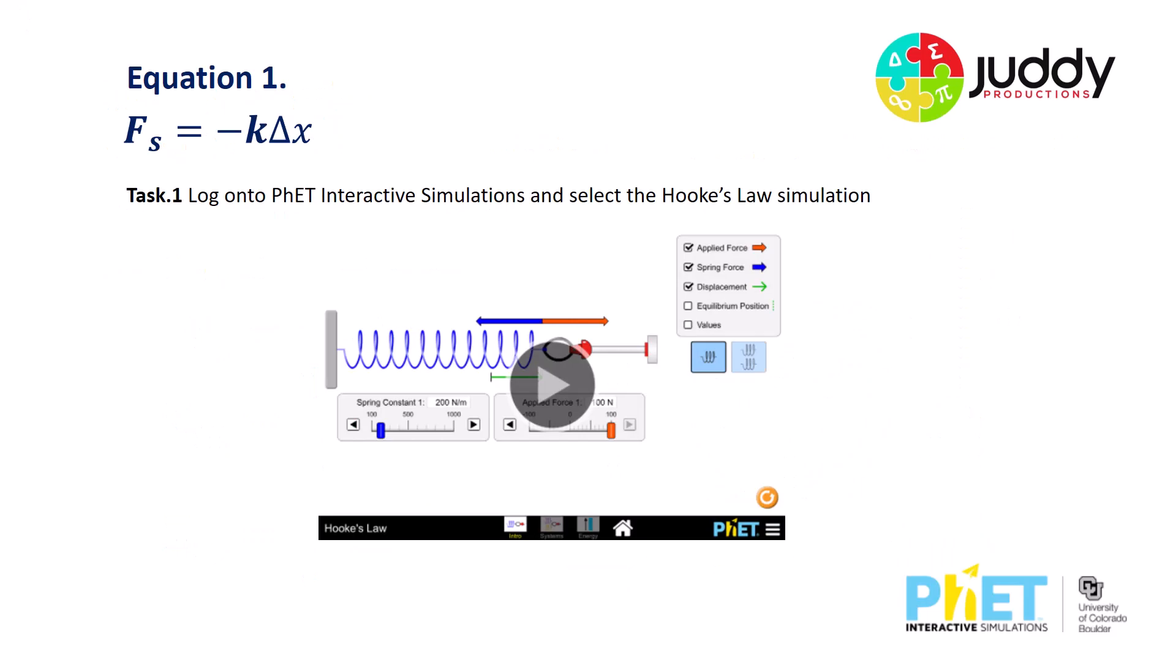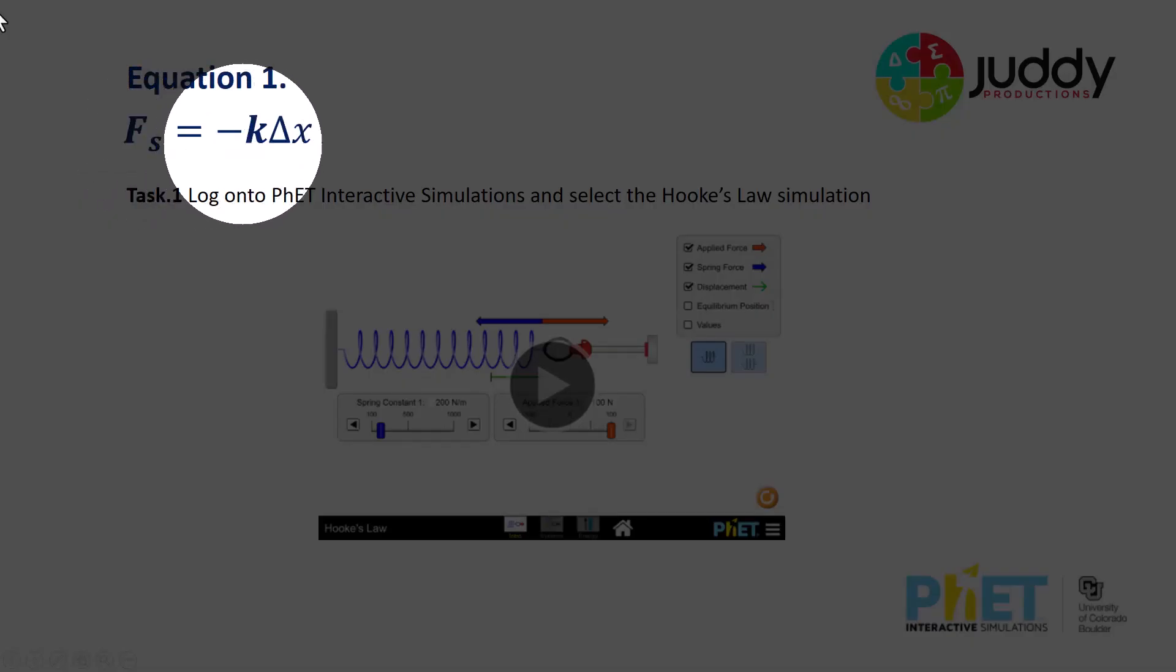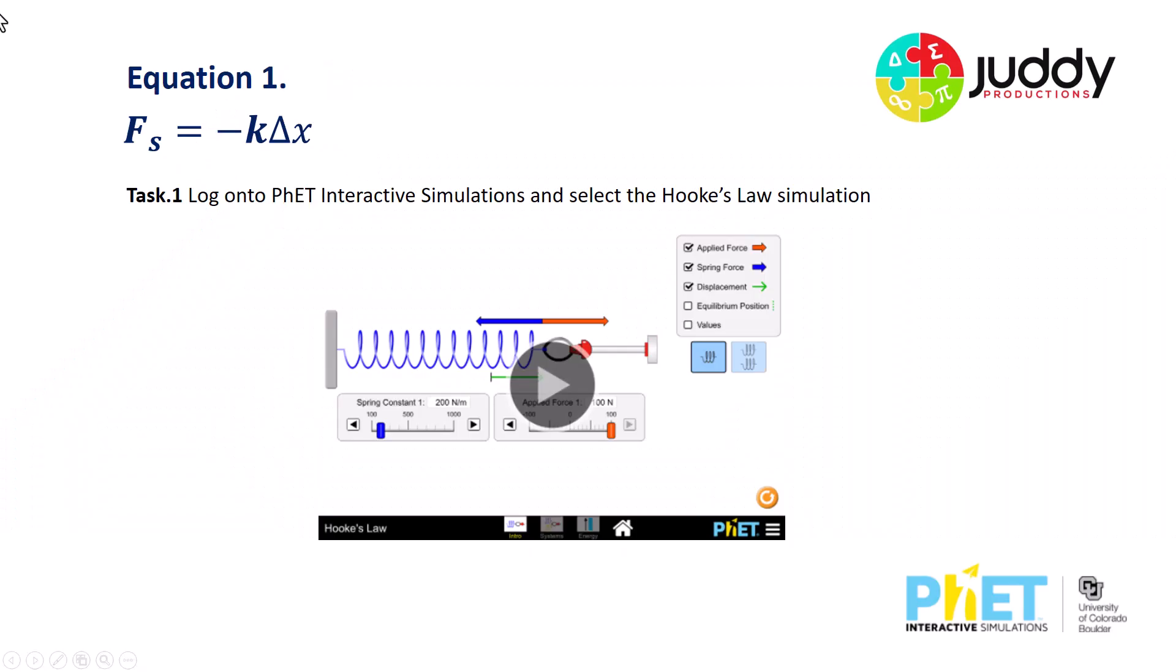So equation number one, the restoration force of a spring is equal to negative k delta x. Let's have a look at this. Now we want to derive this equation by using actual data, examining some evidence using the PHET interactive simulation.